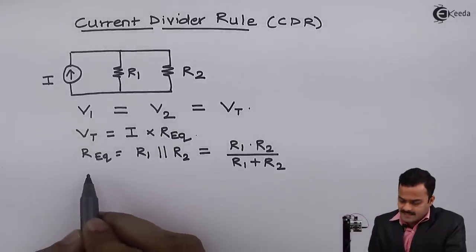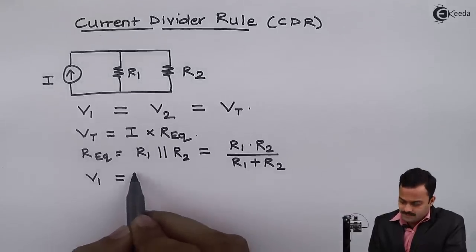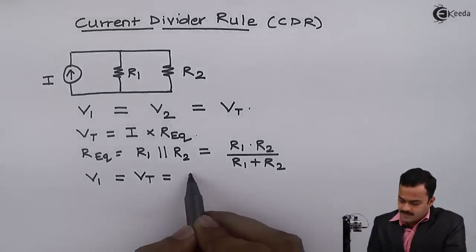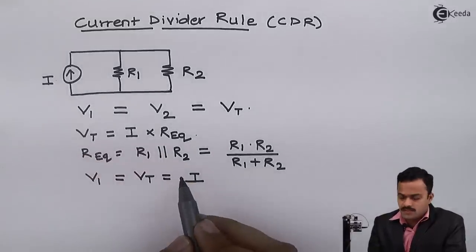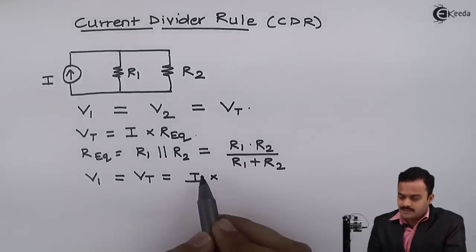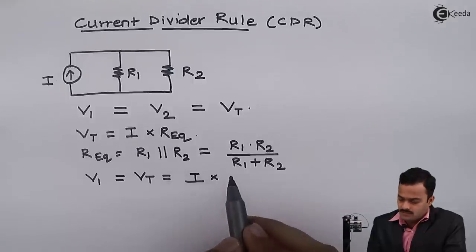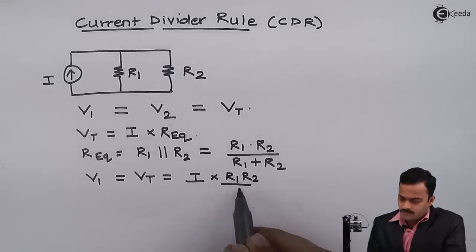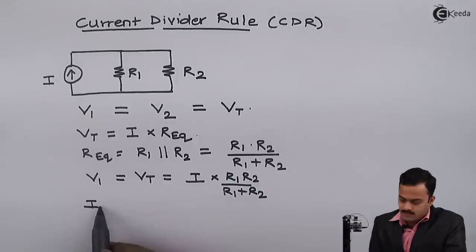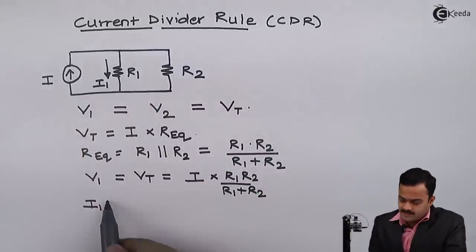So I can say voltage across R1 is same as total voltage, which is total current supplied by the current source multiplied by total resistance, or equivalent resistance which is a resultant of R1 and R2 parallel combination. So voltage across R1 is nothing but current through R1 multiplied by resistance value.